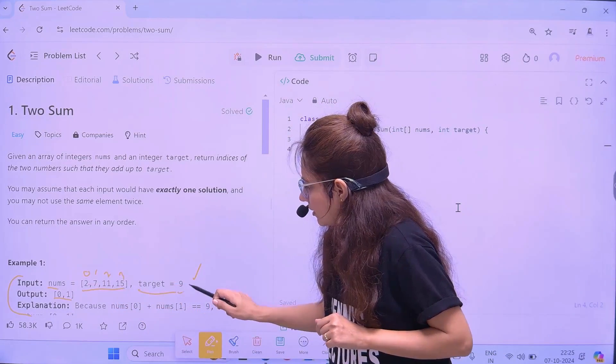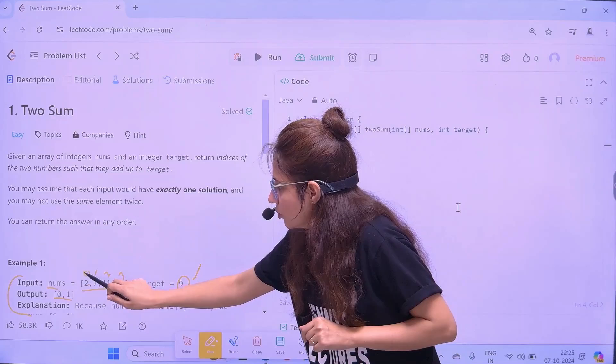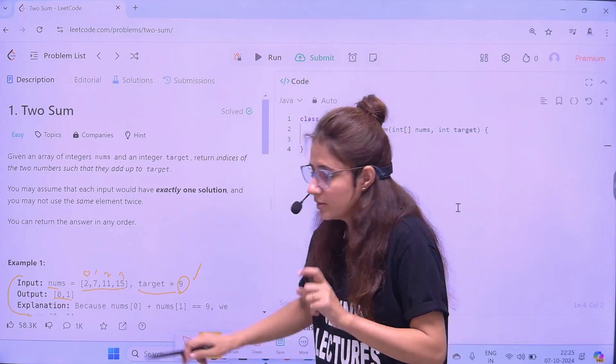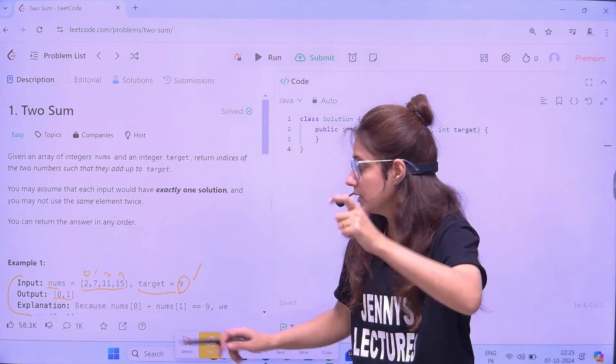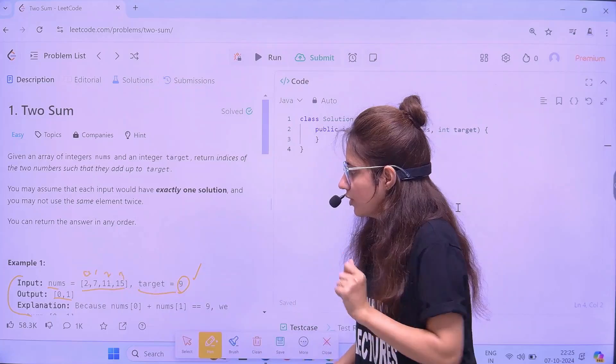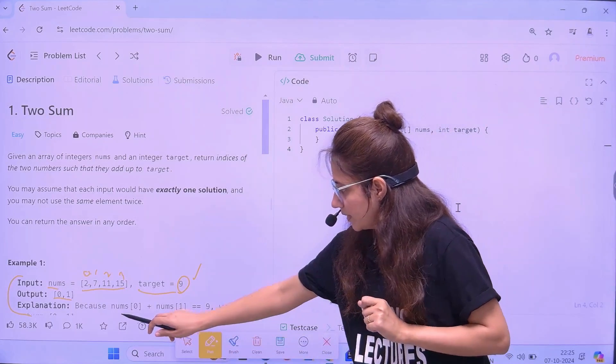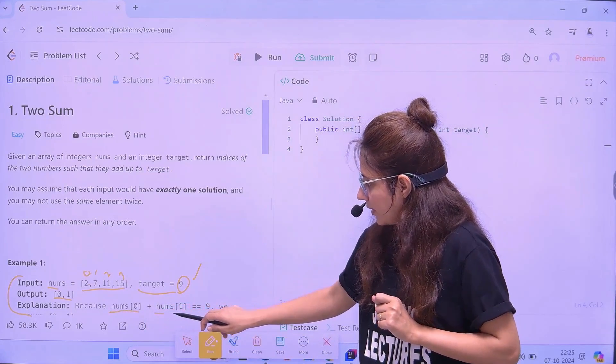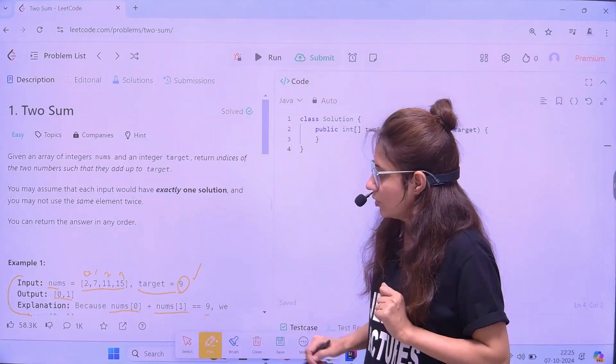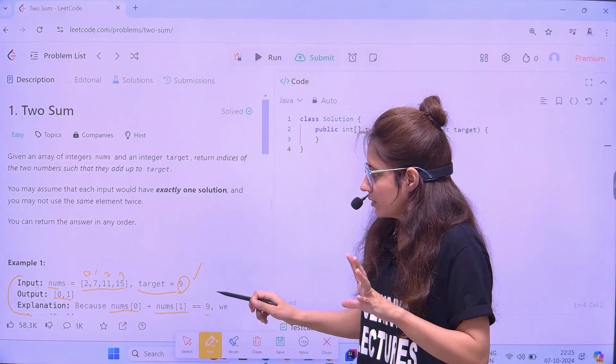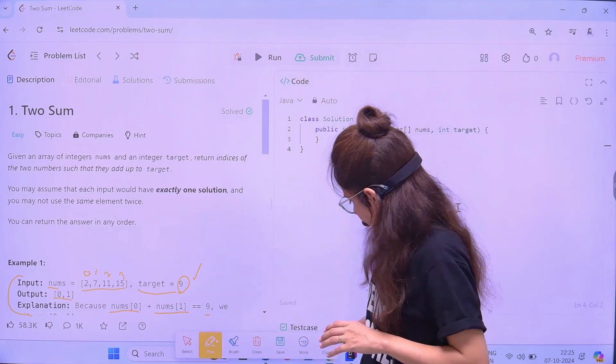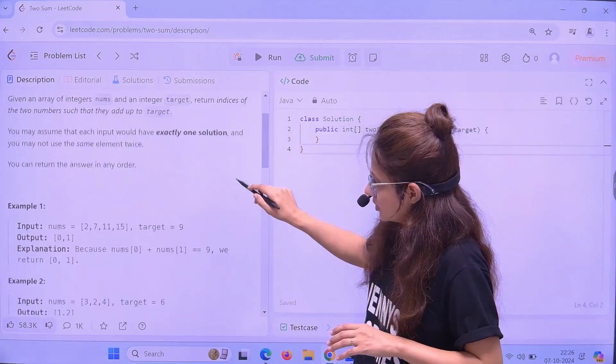So, 2 plus 7 is 9. So, it will return 0 and 1. These 2 plus 7, 2 and 7, these numbers are at the index 0 and 1. So, it will return 0 and 1. I hope you got this.